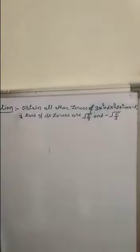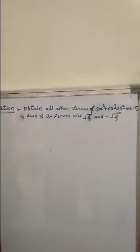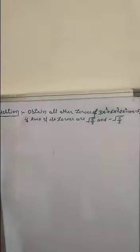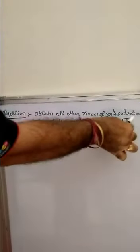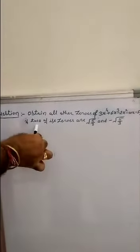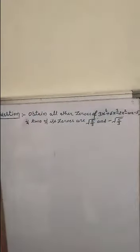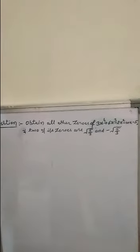Hello students. As you all know, our previous topic was division of polynomials. Now we are going to solve some questions based on it. Our first question says: obtain all other zeros of 3x⁴ + 6x³ - 2x² - 10x - 5. The given polynomial is a degree-four polynomial having four zeros.